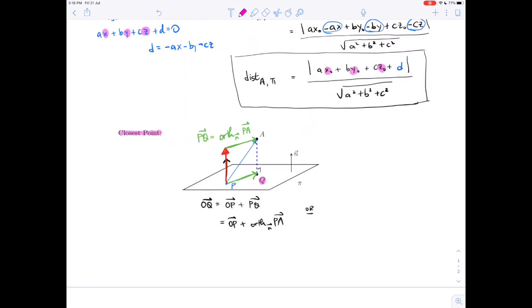Another way of doing it is just look at that projection vector. If I reverse that projection vector, that's minus the projection of PA onto N. So another way: OQ is OA plus AQ, and AQ is minus the projection of PA onto N.